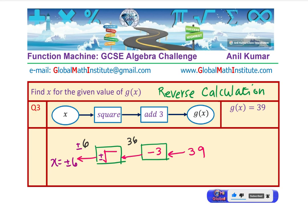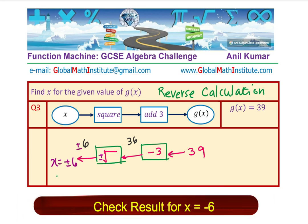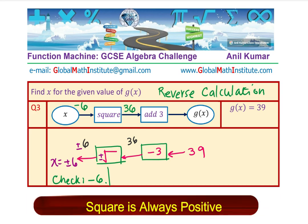I would like you to check the result for at least minus 6. Let's check whether minus 6 is correct or not. If I give an input of minus 6, squaring will make it 36. Squared is always a positive number. And when you add, you get 39, and that is what was given to you as the value of g(x). I hope you have understood the whole operation.